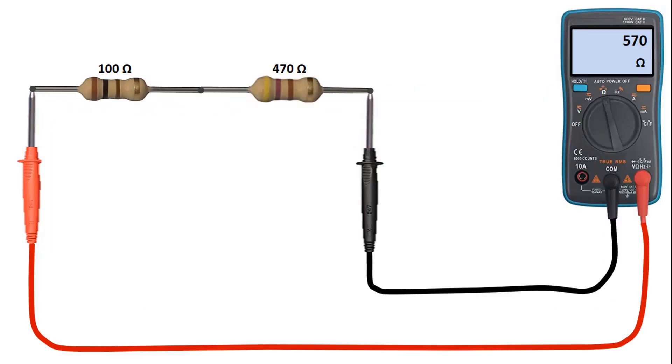When we need higher resistors, we can connect the resistors in series, because in series connected resistors, equivalent resistance is equal to total value of resistors.